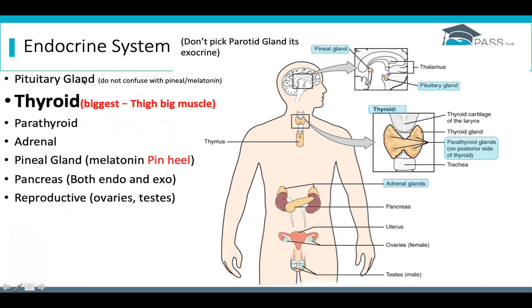We have the pituitary gland, we have the thyroid gland, the parathyroid gland, the adrenal gland, the pineal gland, the pancreas, and then the reproductive glands, such as the ovaries and the testes. Now let's look at a couple broad and general questions that you'll get about these glands.